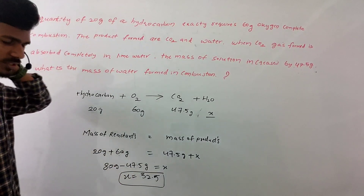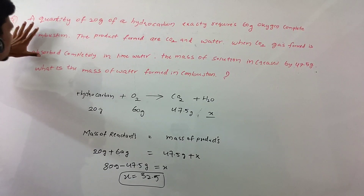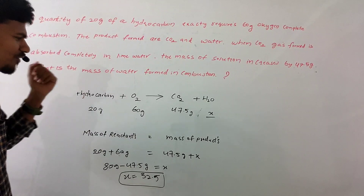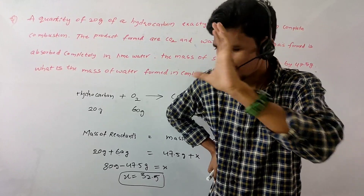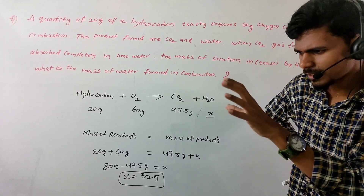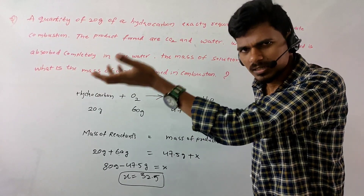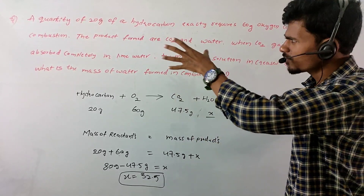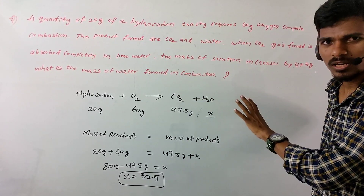First question: what exactly does the law of conservation of mass tell us? It tells us that the mass of the reactants is equal to the mass of the products. First of all, we have to read the question and write the equation from the question.